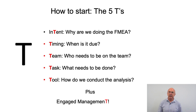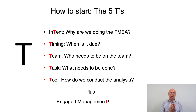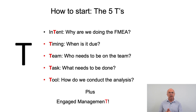So how do we start developing an FMEA using the new AIAG VDA handbook? What they recommend is that we start off with the five T's. The first T is about intent — why are we doing the FMEA. The second T is about timing — when is the FMEA due by, which could be influenced by customer timing. The third T is about team — who do we need involved within the multidisciplinary team to create the FMEA. The fourth T is about task — what does the team need to do. And the fifth T is about what tool are we going to use to conduct the analysis.